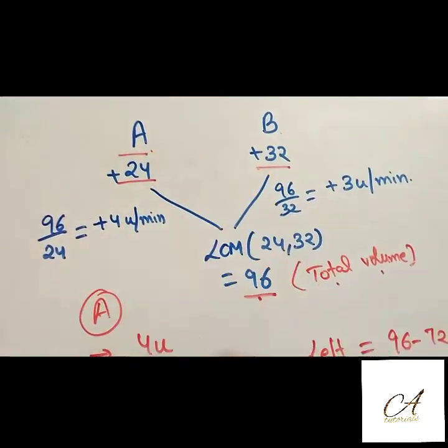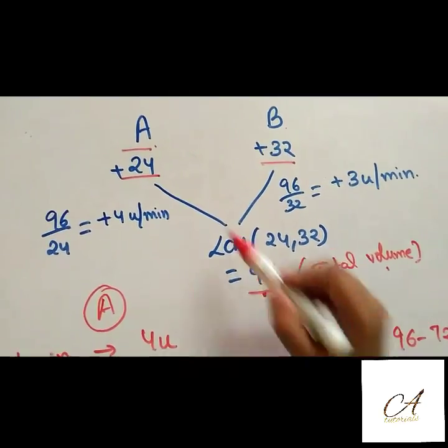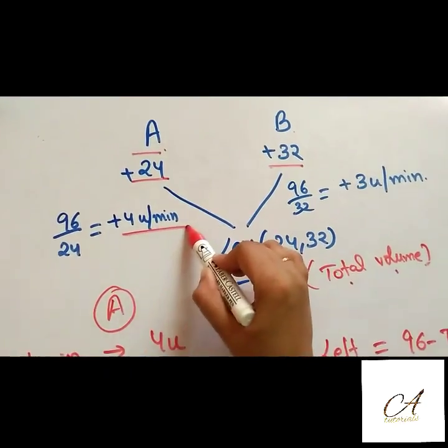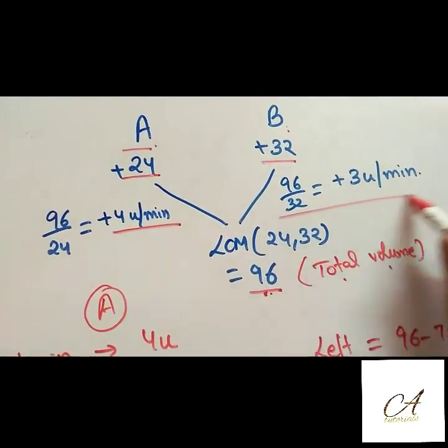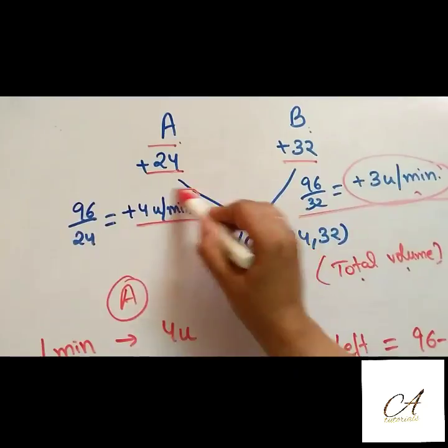So A can fill how much units in 1 minute, 96 divided by 24, that is 4 units per minute A can fill and B can fill 96 divided by 32, that is 3 units per minute.